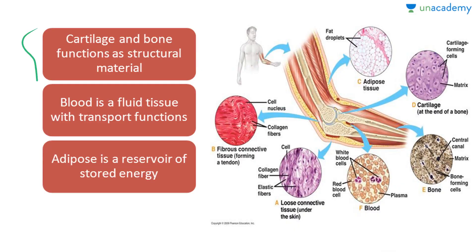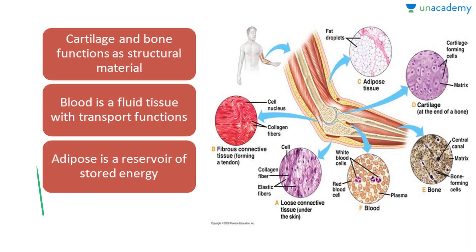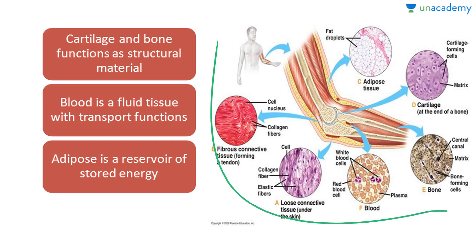Cartilage and bone function as structural materials. Blood is a fluid tissue with transport functions. Adipose is a reservoir of stored energy. All the types of connective tissue are shown in the figure — please learn them.